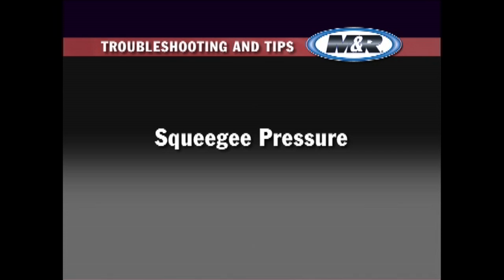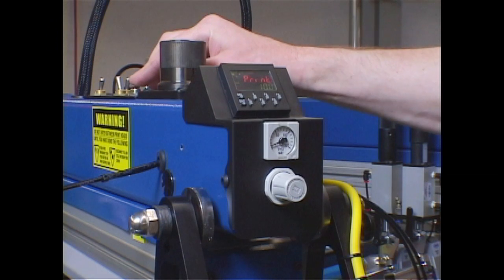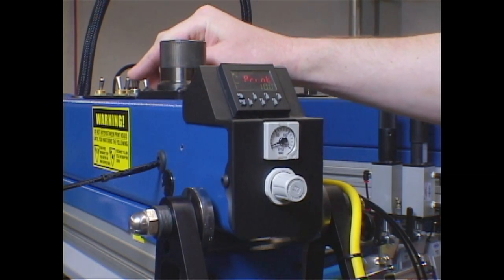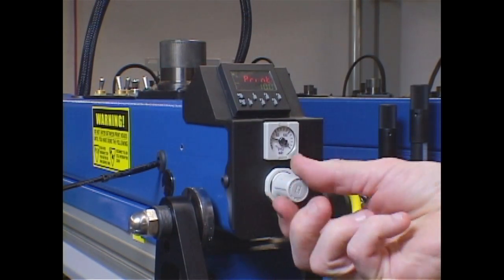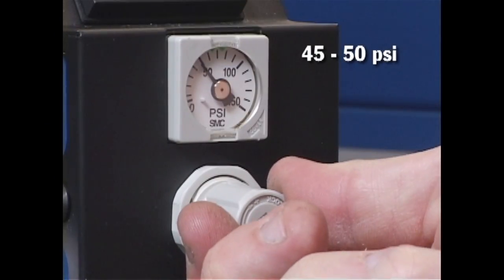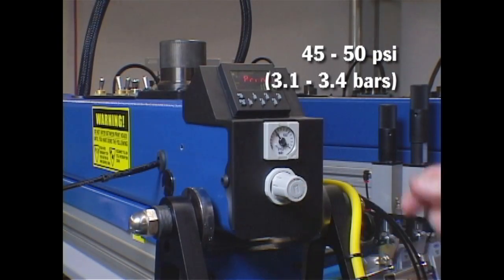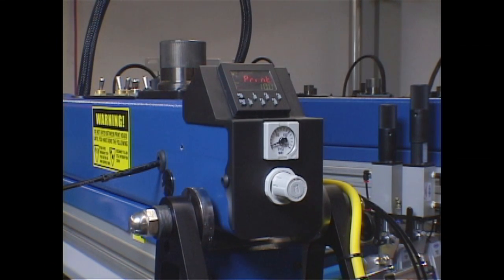Squeegee pressure can affect screen tension, so it's important to check squeegee pressure settings before making the first print. Excessive pressure can throw screens out of registration on the first print stroke. If your press is equipped with squeegee pressure regulators, set each head's regulator to a common pressure between 45 and 50 psi, or 3.1 and 3.4 bars. If your press is not equipped with squeegee pressure regulators, use the mechanical adjustments found on the print carriage to correctly set the squeegee pressure. Refer to the press operator's manual for proper adjustment and operation of squeegee pressure systems.